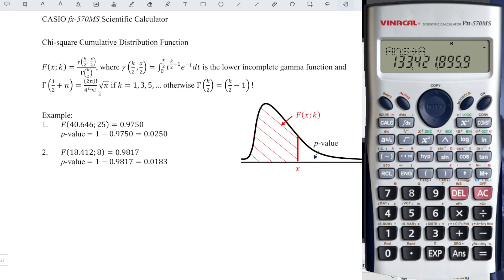Now, proceed to the denominator. We have k over 2. k which is 25 divided by 2. We have 12.5.